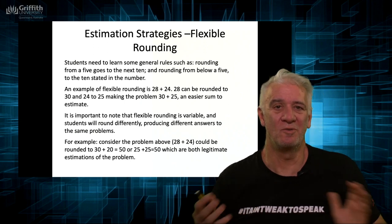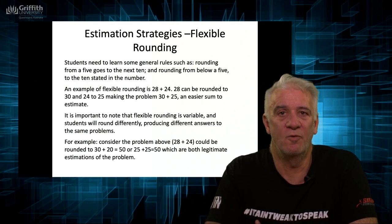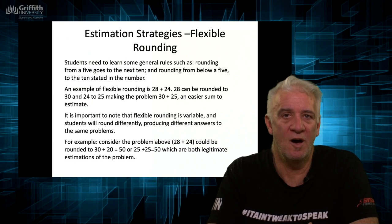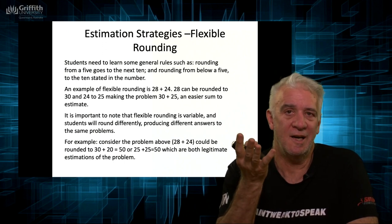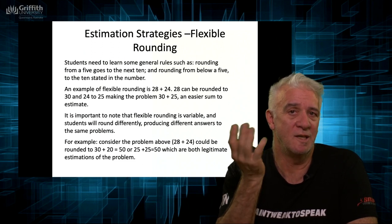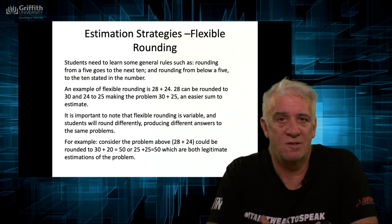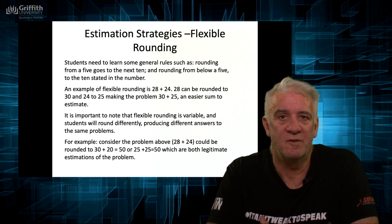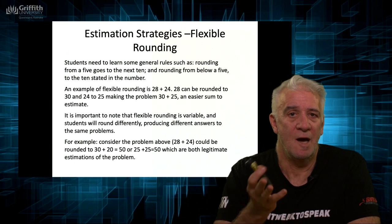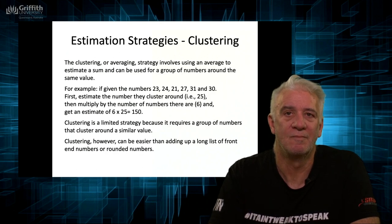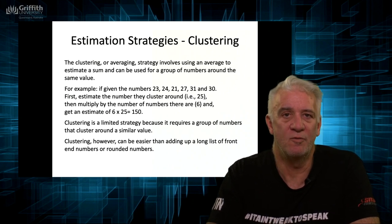Flexible rounding is another strategy — for 28 + 24, round 28 to 30 and 24 to 25, giving roughly 55. Then you've added 2 and 1, so subtract 3 to get the exact answer of 52. I'd actually want students to be able to do 28 + 24 in their heads without reaching for a calculator at all. Clustering is another approach, though it's not particularly useful unless all the numbers are close together. These are just strategies to consider — use them as a guide.